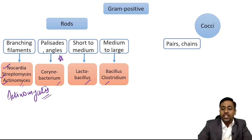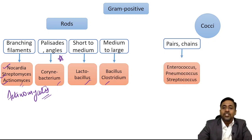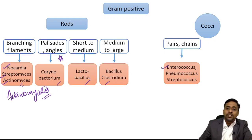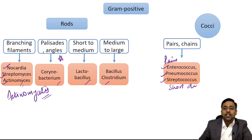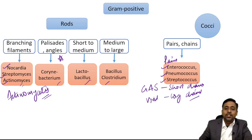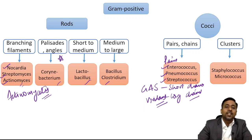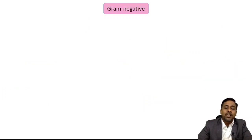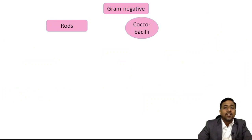Gram-positive cocci can be arranged in pairs, chains, or clusters. In pairs and chains: Enterococcus is commonly arranged in pairs, Pneumococcus is also arranged in pairs, and Streptococcus can be arranged in short or long chains — short chains are mostly group A Streptococcus, long chains are viridans Streptococcus. Cluster arrangement is seen in Staphylococcus and Micrococcus.